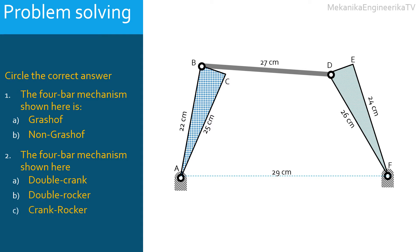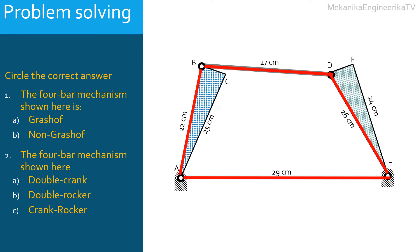Here the effective lengths are the ones connecting the pin joints. So we should consider the distances AB, BD, DF, and AF. The distances AC, BC, DE, and EF do not affect the behavior of this four-bar mechanism.